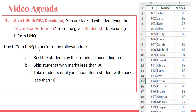Use LINQ query in UiPath to perform the following tasks: First, sort the students by their marks in ascending order using the order by method. Second, skip students with marks less than 80. Then take students until you encounter a student with marks less than 90. So this gives you a range of 80 to 90.